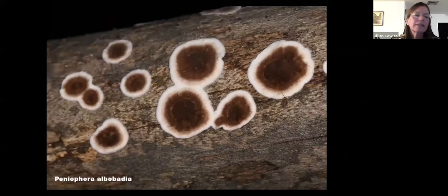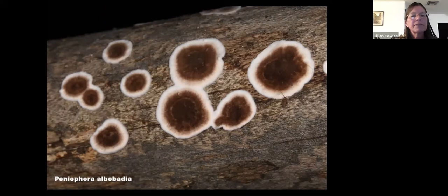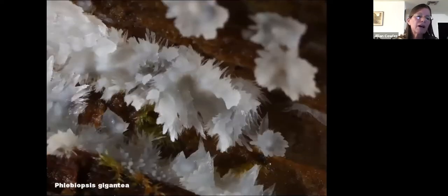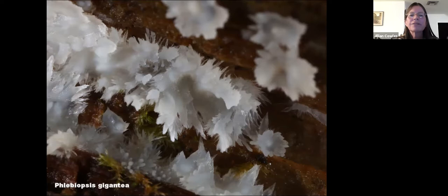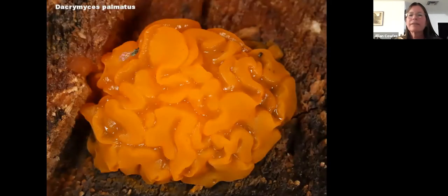Peniophorea is a genus of corticoid fungus that serves as a host to a parasitic fungus called witch's butter — we'll see that a little later. Just remember: witch's butter feeds on Peniophorea fungi. Phlebiopsis is another corticoid fungus that grows on the surface of dead logs. This one looks like ice crystals — these are about a centimeter across, pretty good size.